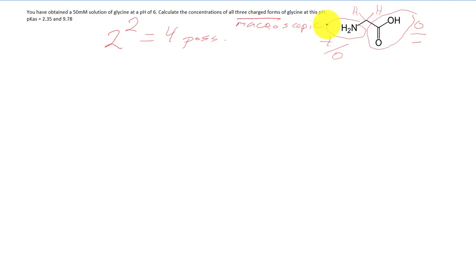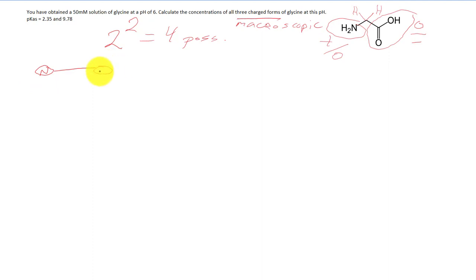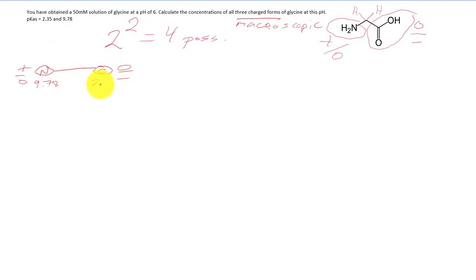We're going to calculate all of those, but first we need to figure out what they look like. Using a simplified ball-and-stick model: the backbone is the constant piece, with nitrogen on the left and the carboxy group on the right. The core states are positive or neutral at the N-terminus, and neutral or negative at the C-terminus. The pKa for the amino group is 9.78, and the pKa for the carboxy end is 2.35.